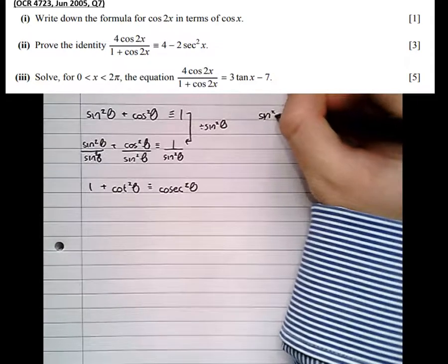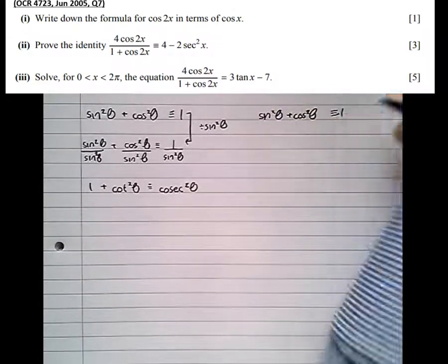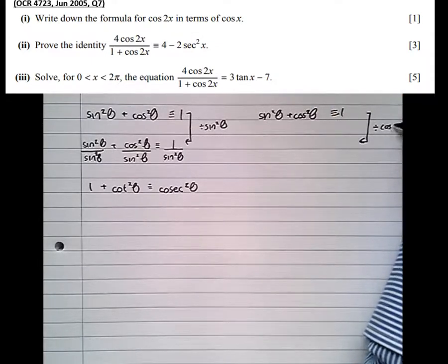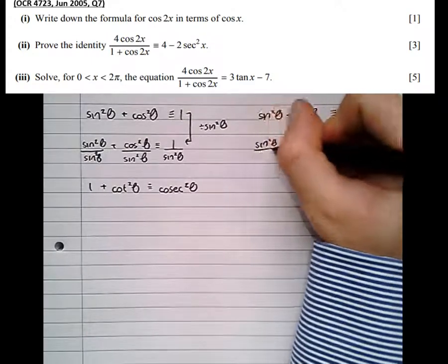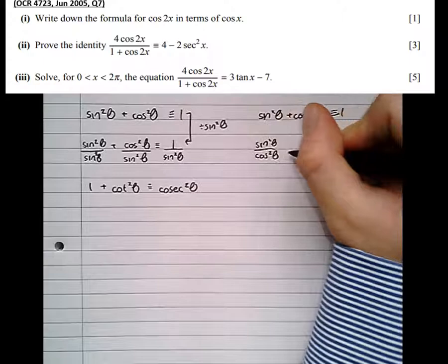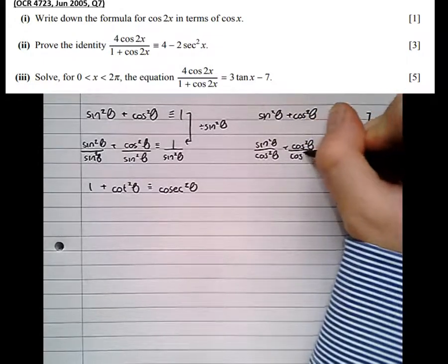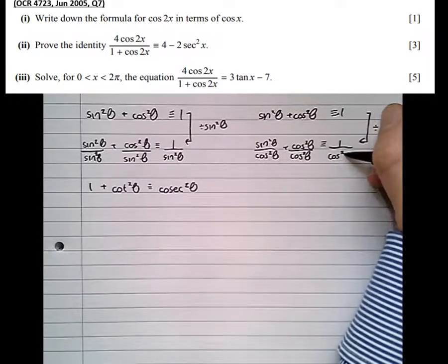Doing it again, so sine squared theta plus cos squared theta, identical to 1. If this time I divide by cos squared theta, I end up with sine squared theta over cos squared theta plus cos squared theta over cos squared theta is identical to 1 over cos squared theta.